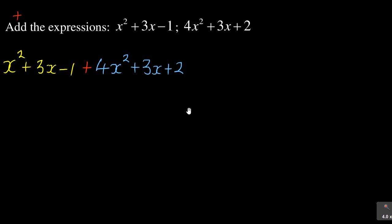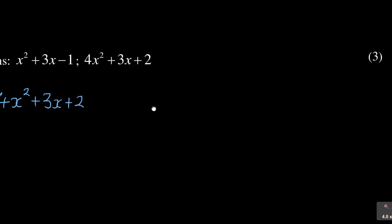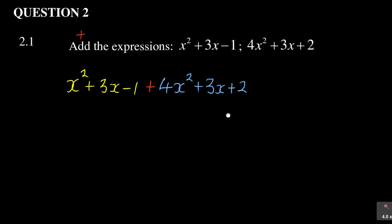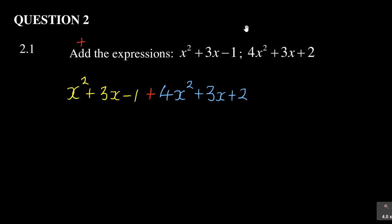Just to check the mark allocation — it was out of 3 marks for this particular question. It is a good way of getting all your marks in this algebra, because what the examiner needs is for you to understand the basics of algebra. When you are adding these expressions, what it simply requires you to do is to look at the like terms. The like terms here refer to matching exponents — x² is similar with the other x², so you add those, and 3x with the other 3x, and the constant with the other constant.